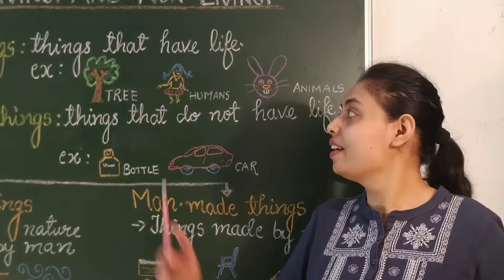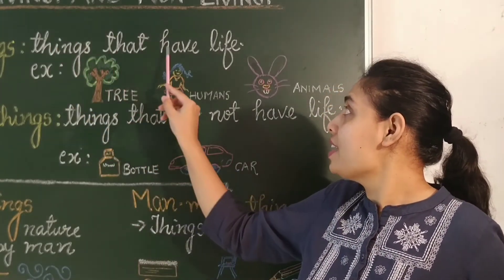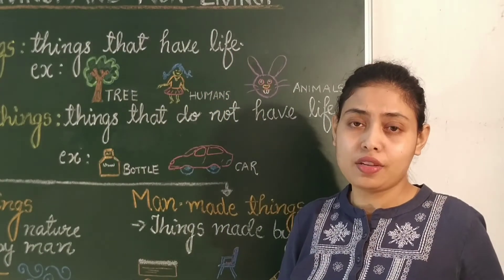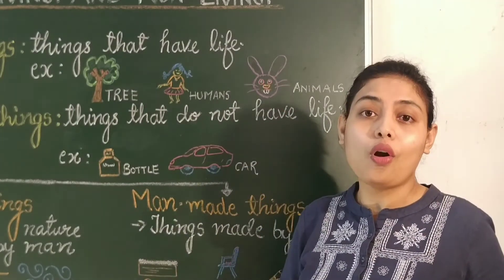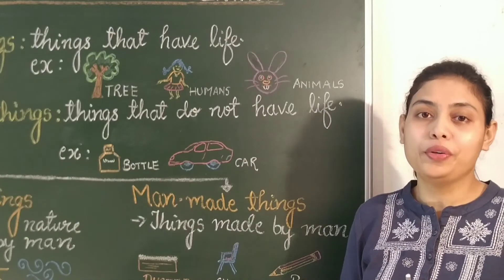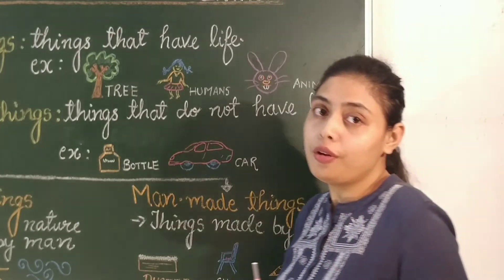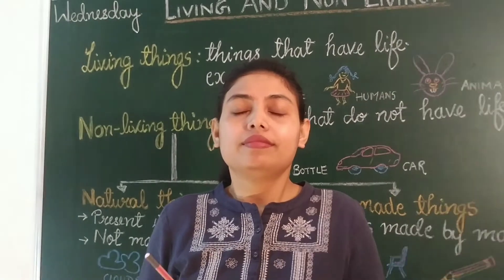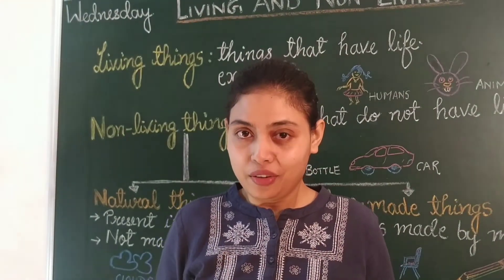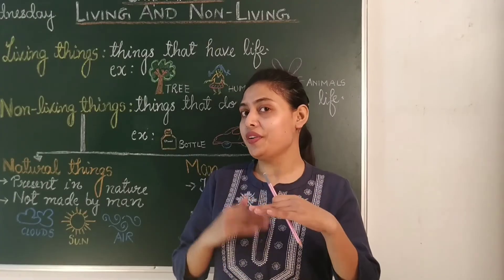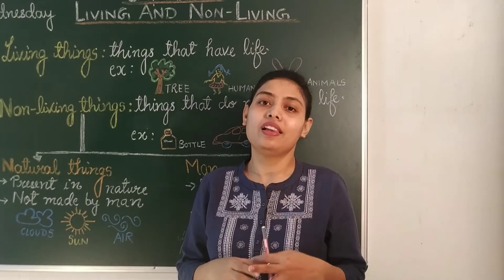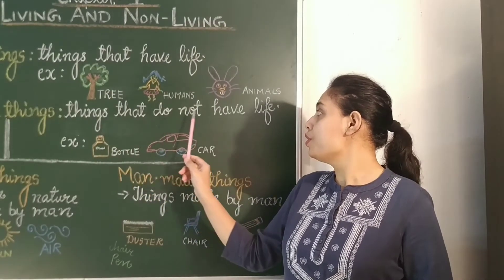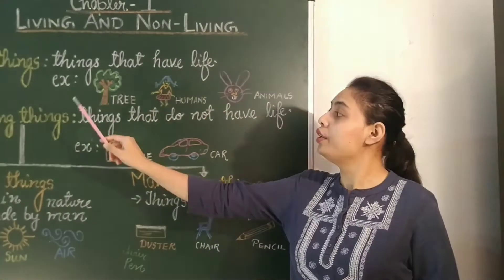Things that have life are called living things. For example, tree, humans, and animals. We are humans. We can move by our own. We breathe. We need food for energy. We grow year after year. These are the few characteristics which make us living things.